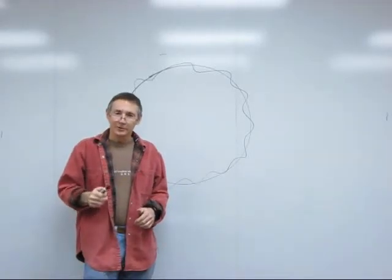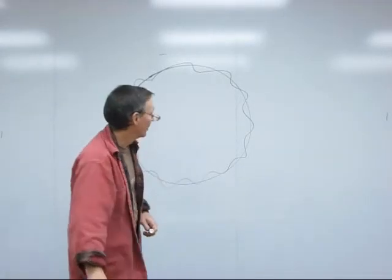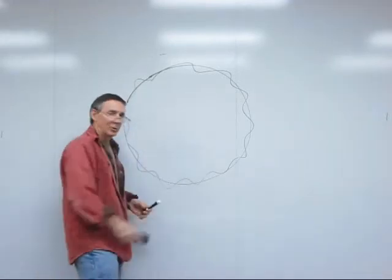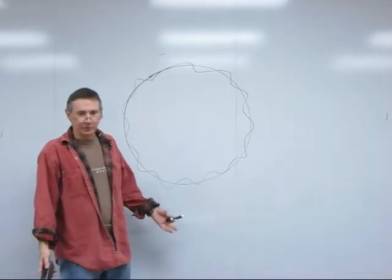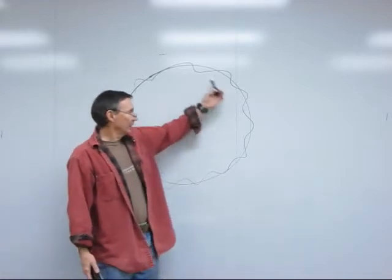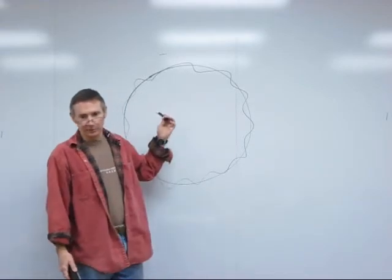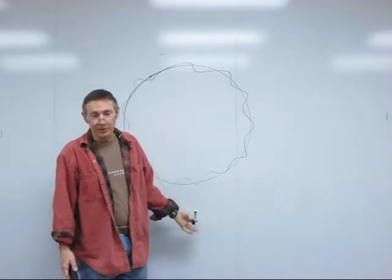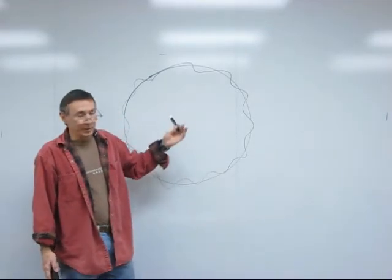The problem with supercoiling arises during DNA replication in E. coli. If you look at the E. coli chromosome, it's a single, circular DNA molecule, and during replication, the two strands, which are twisted around each other once every ten nucleotides, or many thousands of times, have to be separated.